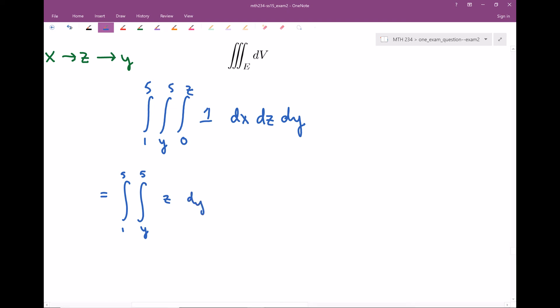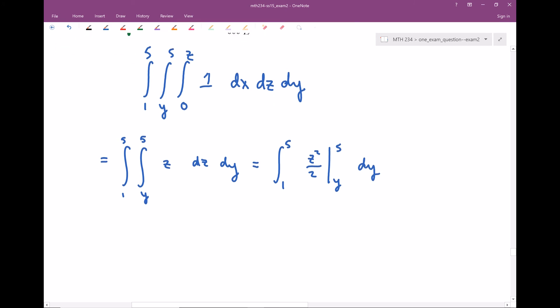I still have my Z integral and my Y integral. Let's evaluate the next one - dz, integrating with respect to Z. My Y integral not yet. When I integrate with respect to Z, I'm gonna have Z squared over two. And I need to evaluate from Y to five. I still have my Y integral here. This one's a little bit more complicated.